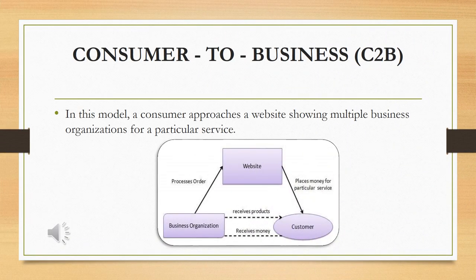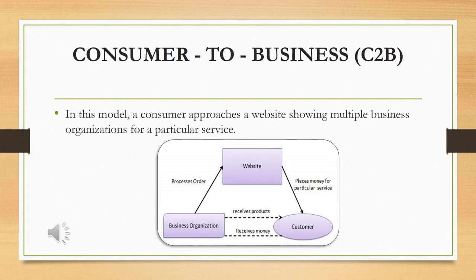The next category is consumer to business — C2B. In this, one consumer makes their product and services available online for companies or organizations to bid on and purchase, along with the estimated amount they want to spend for that particular service. The business organizations that fulfill the consumer's requirements within the specified budget then approach that customer and provide their services. This is basically occurring between consumers and businesses, where the consumer is using the organization's site for utilizing a particular service.